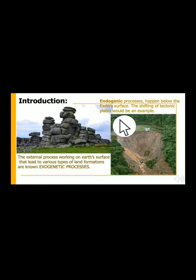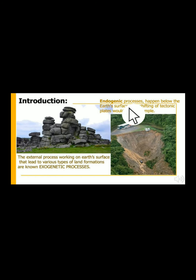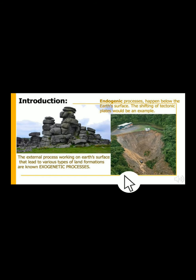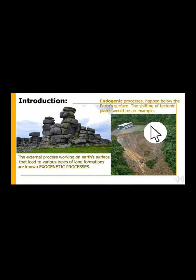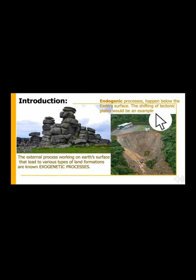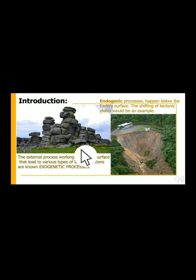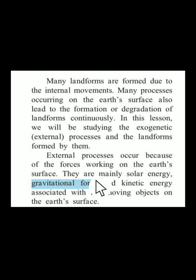On the other hand, my dear students, in the previous lesson you studied endogenetic processes. These are processes happening below the earth's surface. An example given to you is the shifting of tectonic plates. We have studied about tectonic plates while studying earthquakes, and how shifting of tectonic plates leads to these kinds of processes. So is it clear what endogenetic and exogenetic mean?